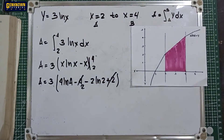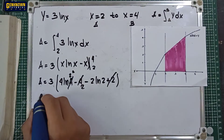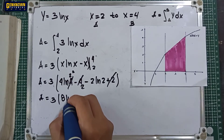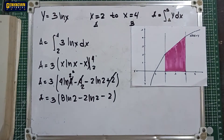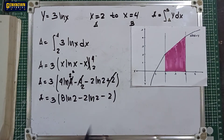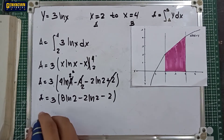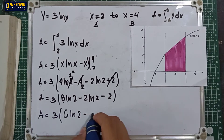Simplifying: ln 4 becomes 2 ln 2, so 4 ln 4 becomes 8 ln 2. The area equals 3 multiplied by (8 ln 2 minus 2 ln 2 minus 2). Combining the logarithm terms, 8 minus 2 is 6, giving us 3 times (6 ln 2 minus 2).